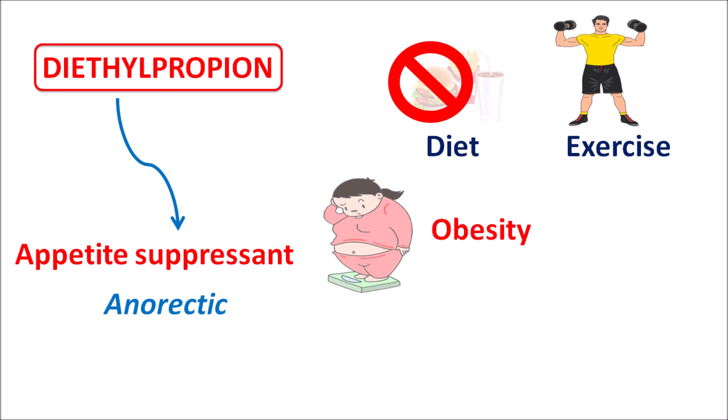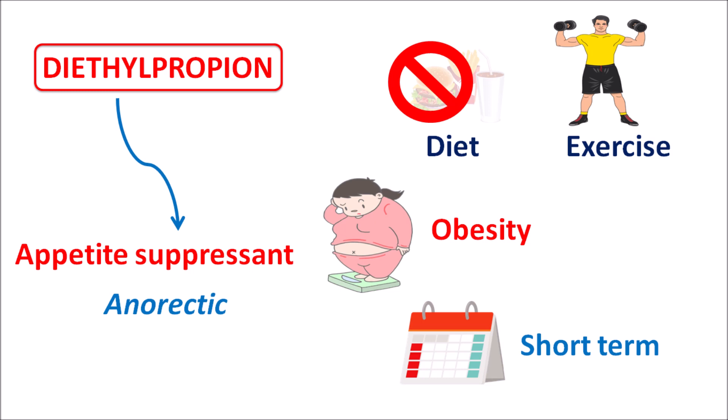This drug is used for short-term treatment only, for a few weeks. Diethylpropion is a sympathomimetic, so it can stimulate the sympathetic system, which may stimulate major organs like the cardiovascular system, leading to various complications. That's why diethylpropion is not used for long-term treatment. For short-term management of obesity, this drug can be given with fewer central side effects compared with other drugs within this category.